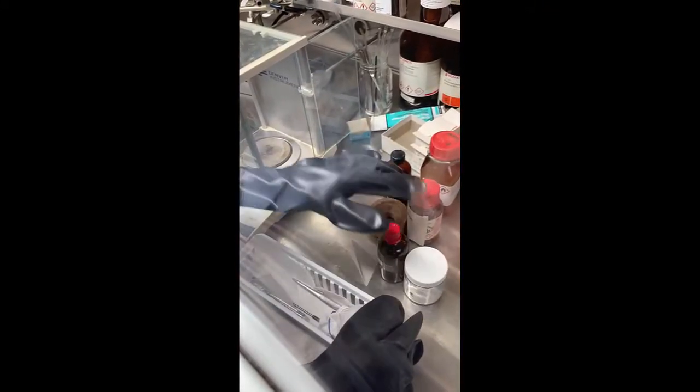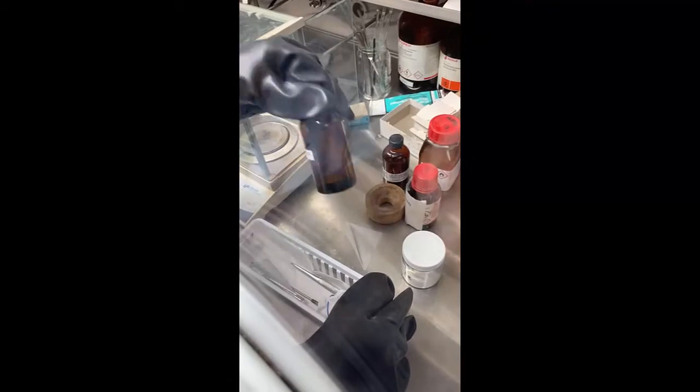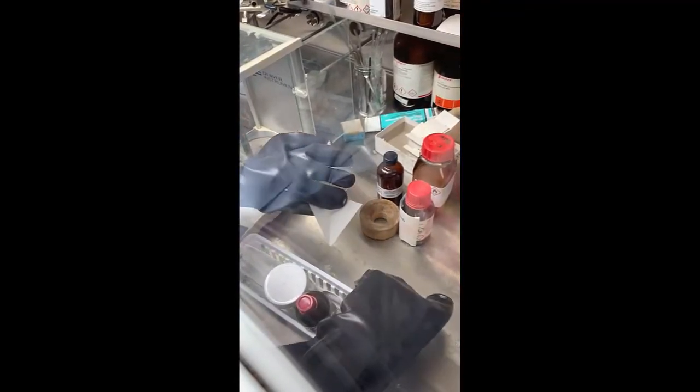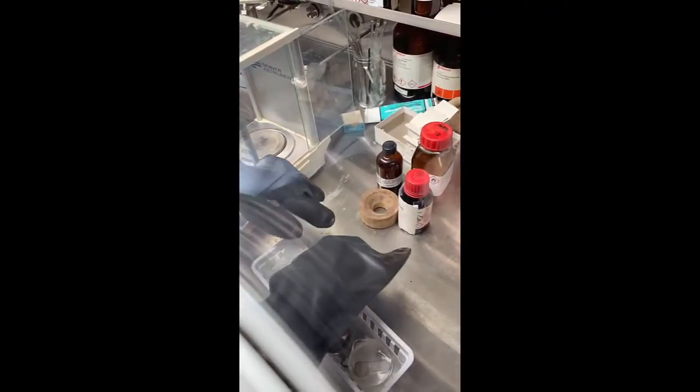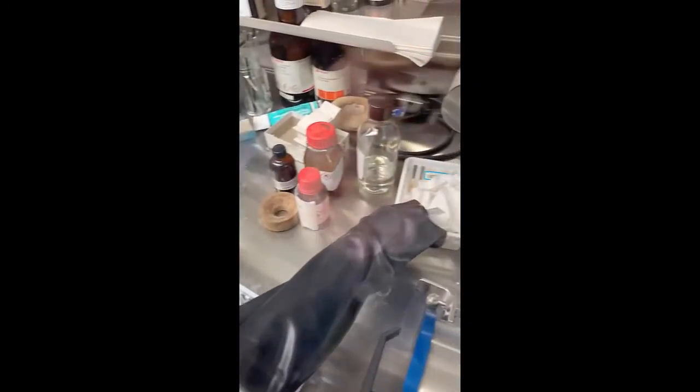Then, place everything that you brought into the glove box back into your bin. Make sure that any chemicals that you brought in, including solvents or solids, are back in your bin. Anything that was in the glove box when you started can remain in the glove box unless otherwise stated. And also, be sure to remove any garbage or trash that you generated while in the glove box to keep it clean for the next people to use.